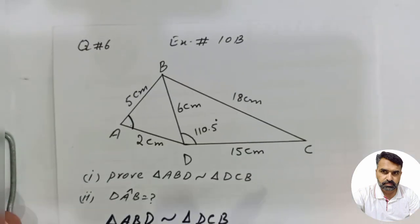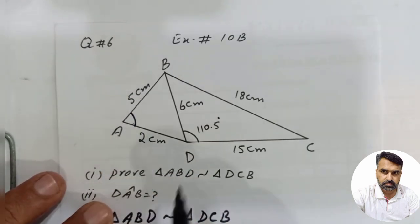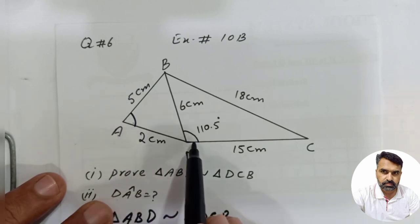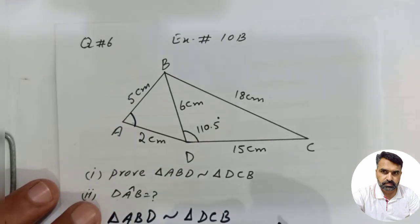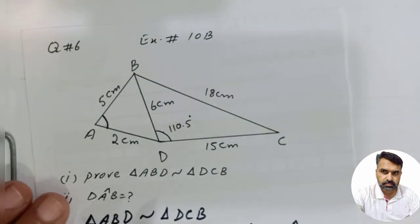If these two triangles are similar, then angle DAB is equal to angle BDC. So angle DAB is equal to BDC, which is 110.5 degrees. This is 110.5 degrees.